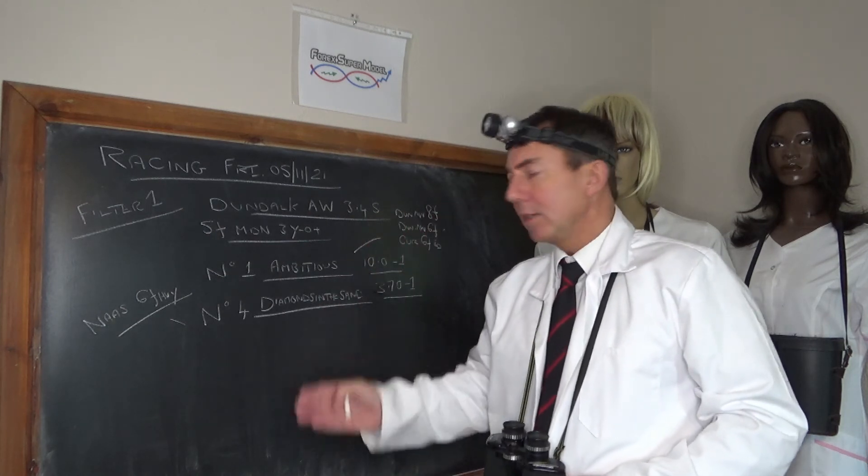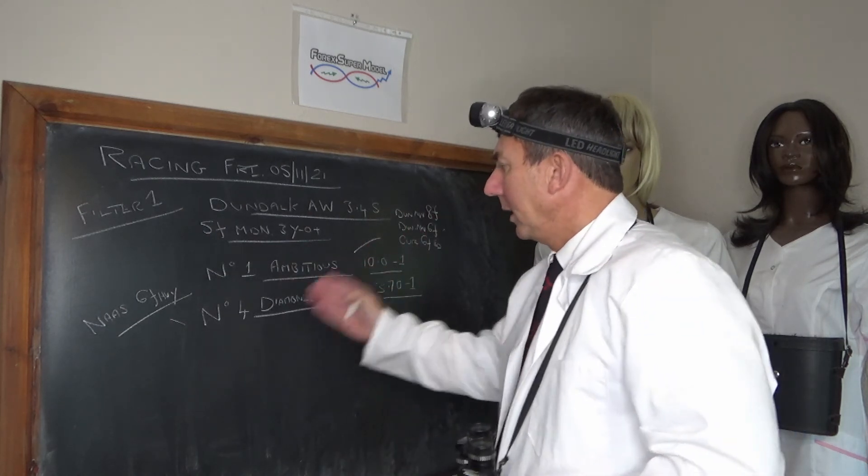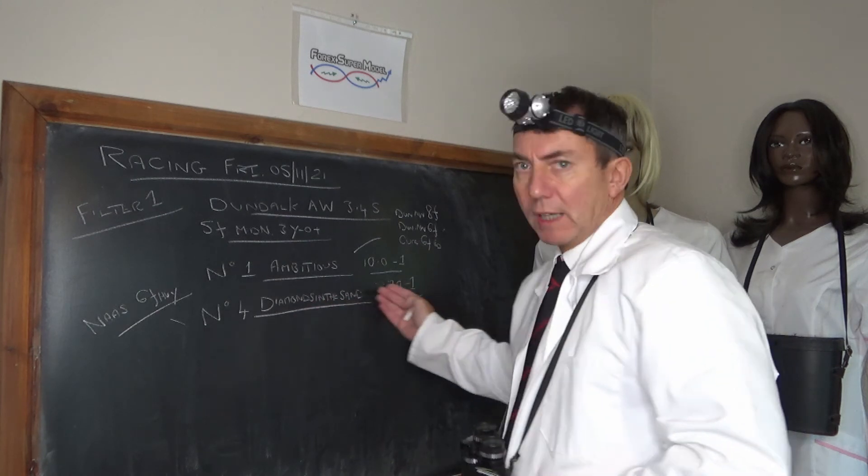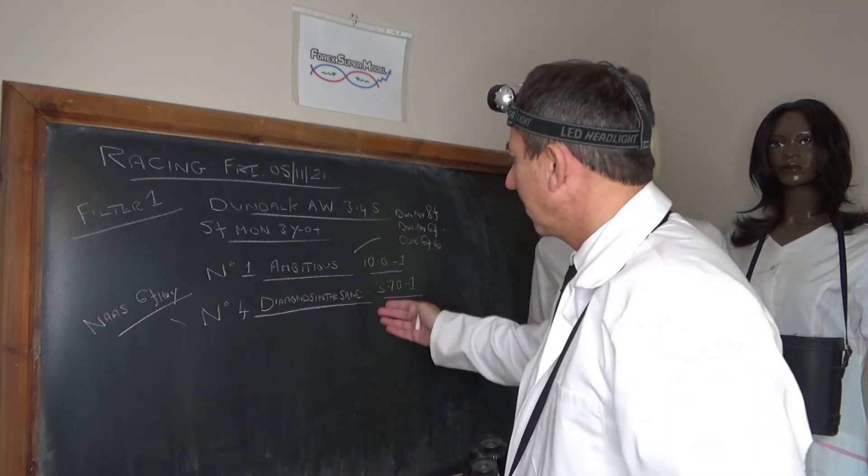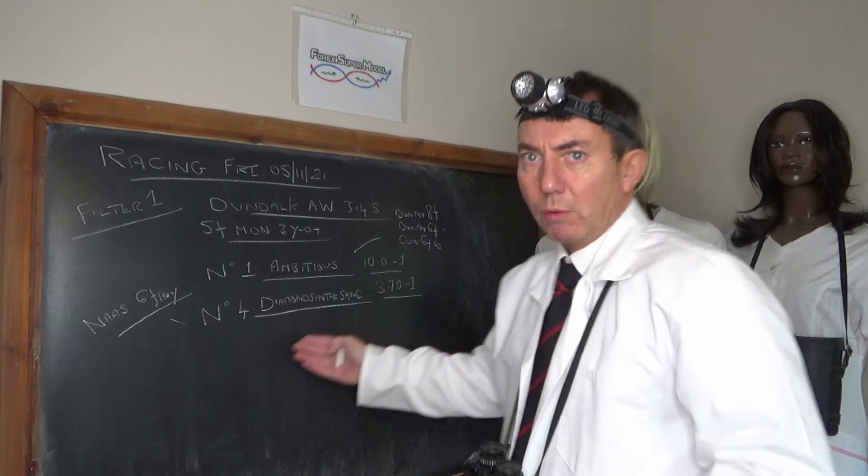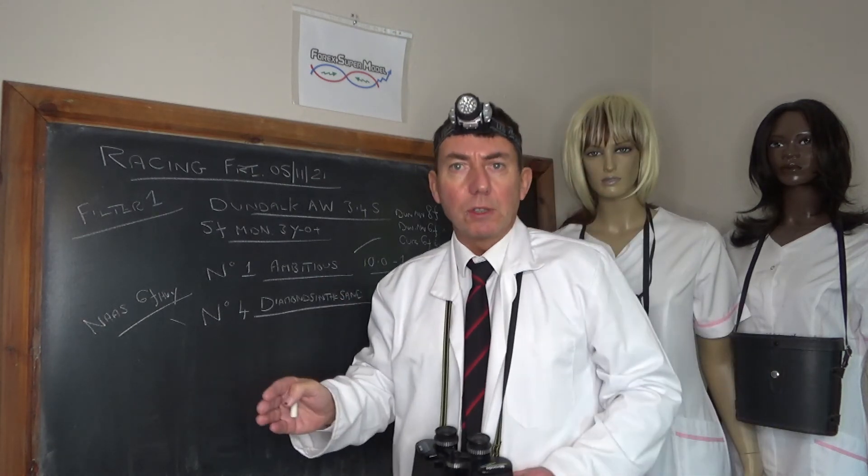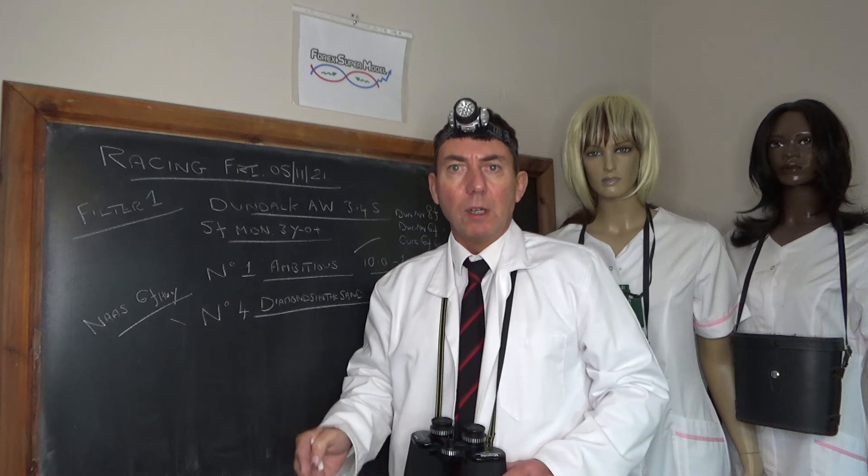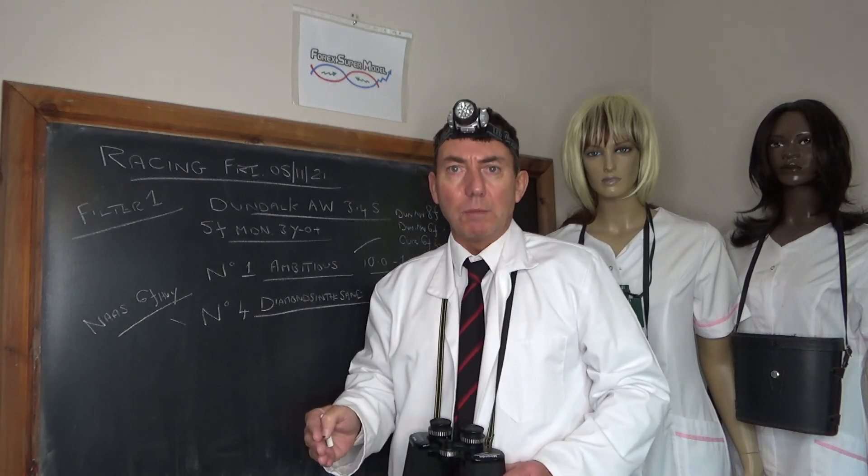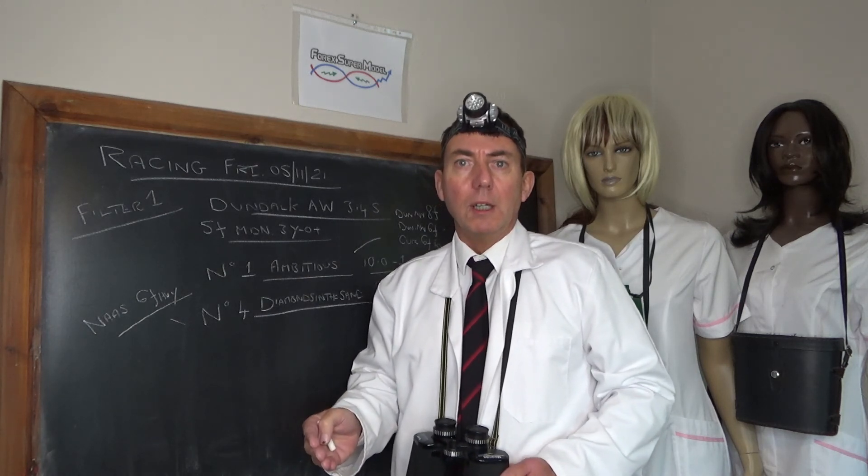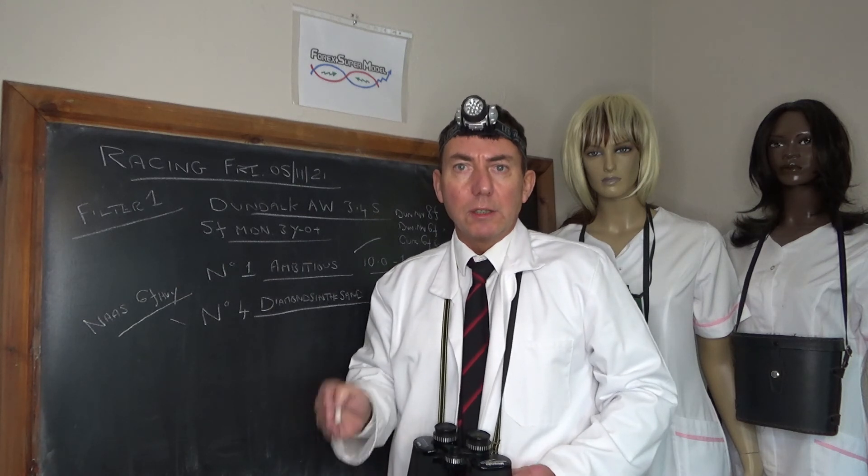So to recap then, we've got a filter one race at Dundalk 3:45. We're having a go at two horses in the same race: number one Ambitious to win and number four Diamonds in the Sand to win, and we've got an average of ten to one and 3.7 to one. So that's where we are. We'll see how those go. We've got something to review tomorrow for Saturday and hopefully we'll get some more bets on tomorrow as well. So thank you for watching. See you tomorrow. Goodbye.